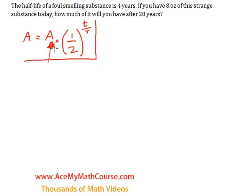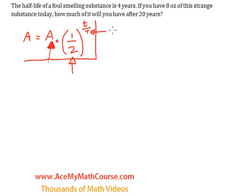A0 is just the initial quantity, the initial amount. Since we're dealing with the half-life of a substance, we have a half here. The big T represents the actual half-life — so how long it takes for the substance to decay by half. After that time period, we're only left with 50%, just half of what we had originally. And little t is just time — the amount of time that goes by.